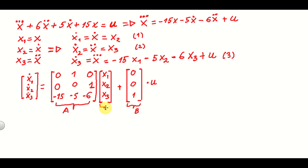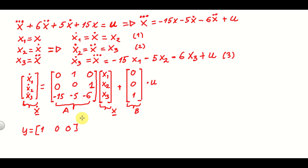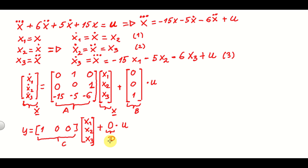We denote the state vector as x underlined, so the left-hand side is x-underlined-dot. This is our state equation. To form a complete state-space model, we need an output equation. Assuming only x is measured, the output equation is y equals [1, 0, 0] times [x1, x2, x3] plus 0 times u. This C matrix is [1, 0, 0] and D matrix is [0]. This is our complete state-space model.